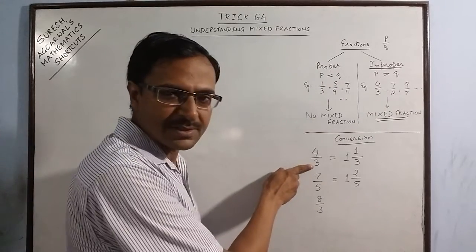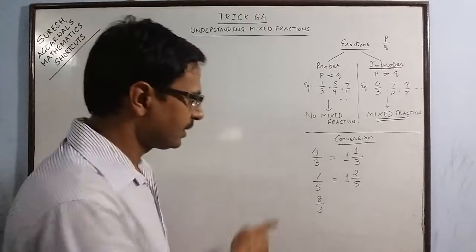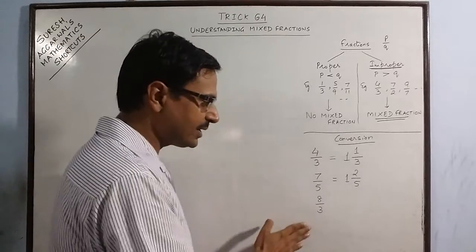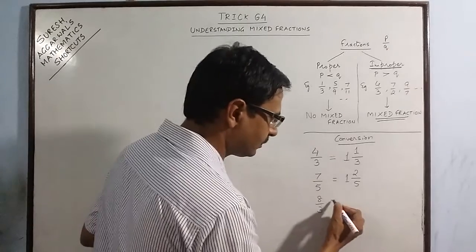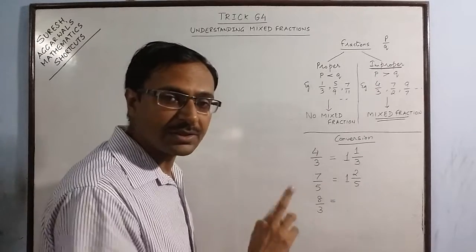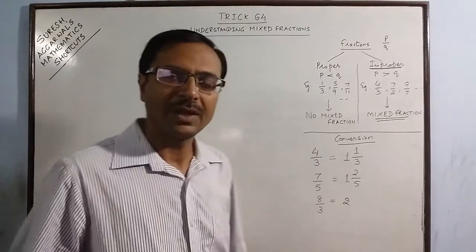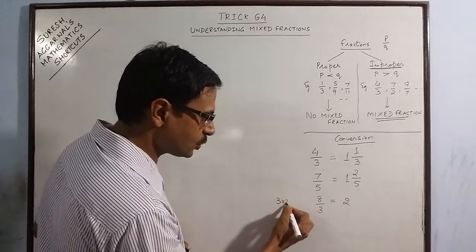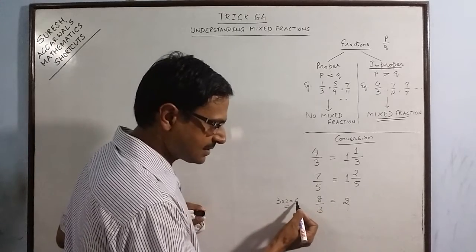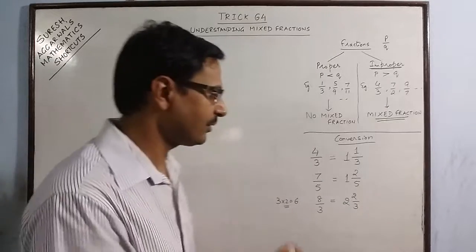Here we observe that in this case 3 ones are 3 was less than 4 but 3 twos are 6 was more than 4. In this case it is a little bit different. If you count the table of 3, 3 ones are 3 is less than 8, 3 twos are 6 is again less than 8, but 3 threes are 9 is more than 8. So we stop at 3 twos are 6. When we have written 3 into 2 is 6, we retain this 2 in the answer, and then 8 minus 6 gives us 2 and the denominator remains the same. So 2 and 2 by 3 is the mixed fraction of 8 upon 3.